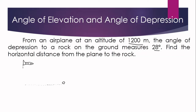So this is 1200 meters. The angle of depression is given, meaning the object being observed is below the observer on the plane. Here is the horizontal — the eye level of the observer — and this is the line of sight going down to the rock. The angle formed between the horizontal and the line of sight is 28 degrees. We are looking for the horizontal distance from the plane to the rock, which we represent as x.